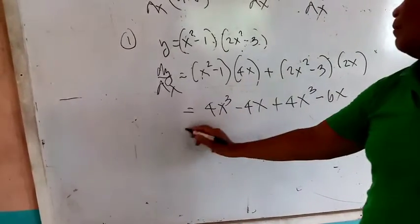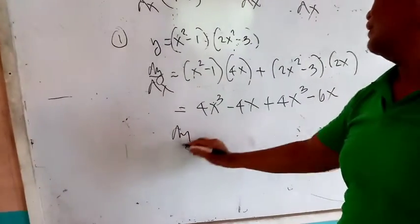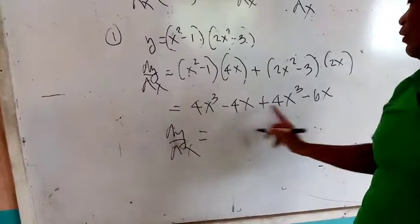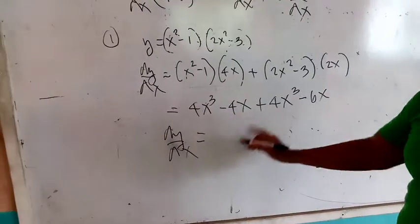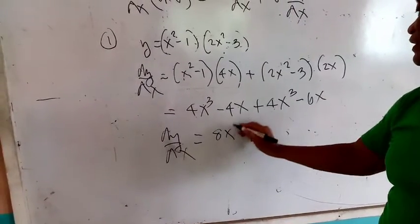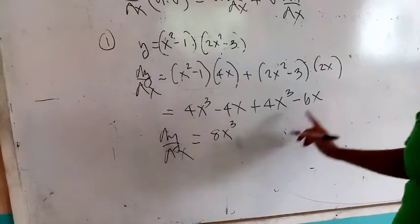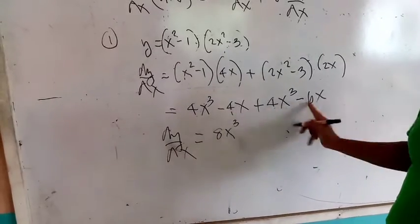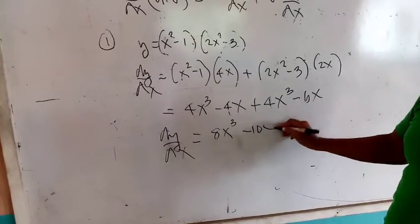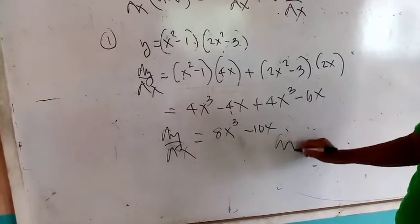Going to algebra: multiplying gives 4x to the 3rd power, then minus 4x, plus 2 times 2 gives 4x to the 3rd power, then minus 6x. When you combine similar terms, adding 4 plus 4 gives 8x to the 3rd power, then combining gives minus 10x.